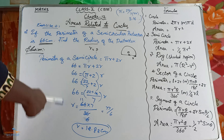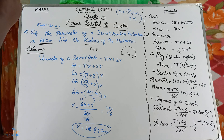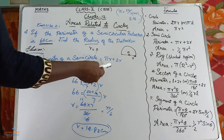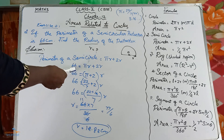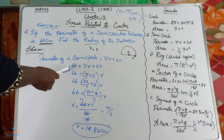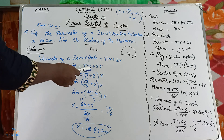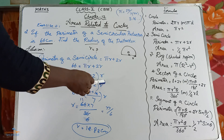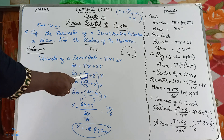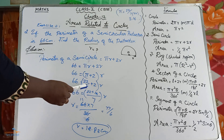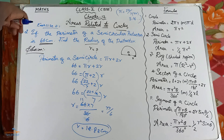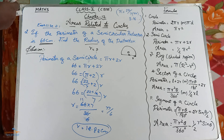You have got the answer. Once again: you are given the perimeter of a semicircle and the formula is pi R plus 2R. They have given the perimeter as 66 cm. Take R as a common factor to get (pi plus 2) times R. Substitute pi as 22/7, solve, and you get the final answer 12.83 cm. The next problem is a little tougher.